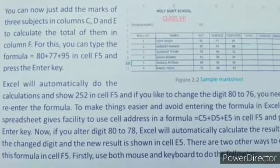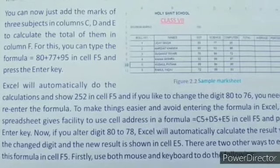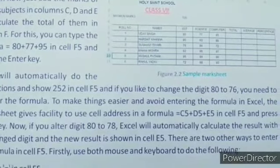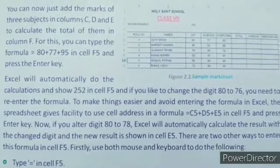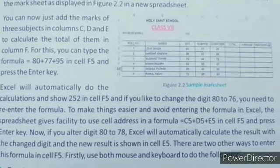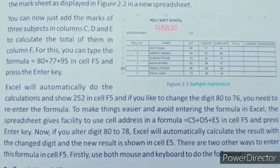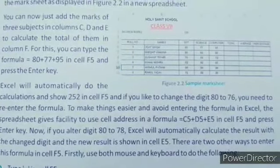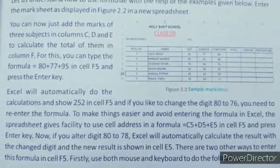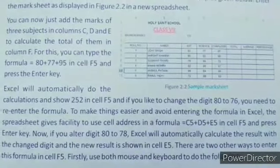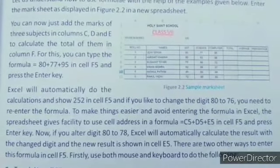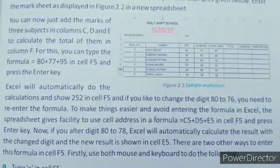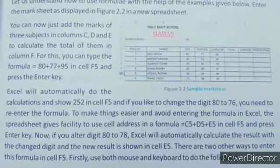Excel will automatically do the calculation and show 252 in cell F5. If you like to change the digit 80 to 76, you need to re-enter the formula. To make things easier and avoid entering the formula in Excel, the spreadsheet gives the facility to use cell addresses in a formula: C5 plus D5 plus E5 in cell F5 and press enter key. If you alter digit 80 to 78, Excel will automatically calculate the result and the new result is shown in E5.